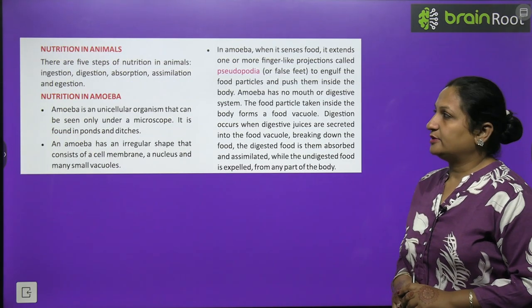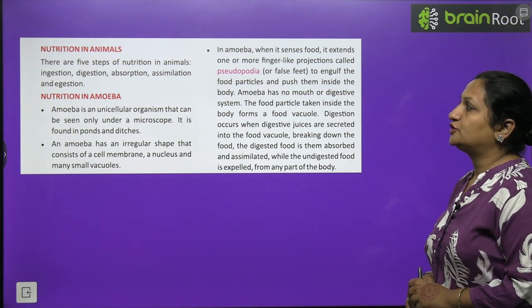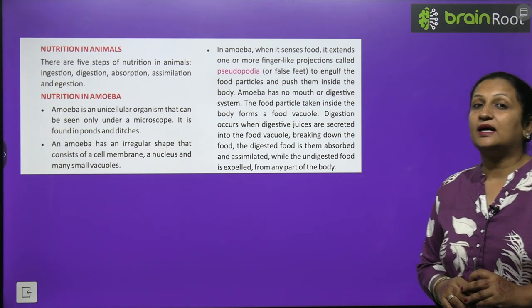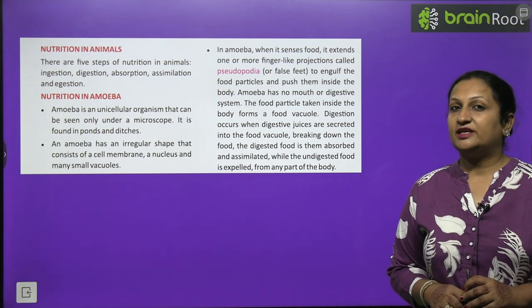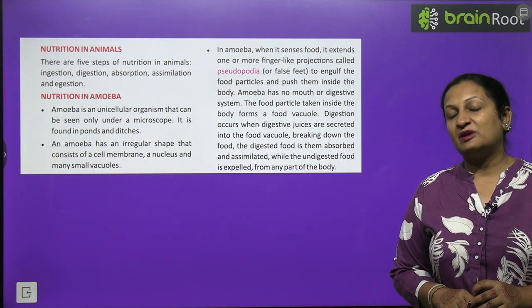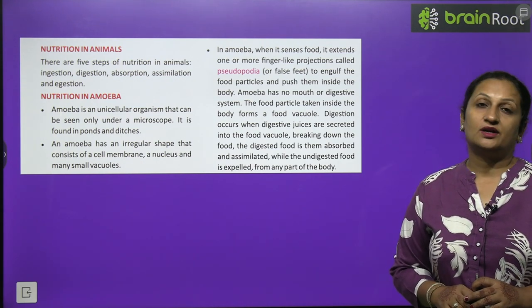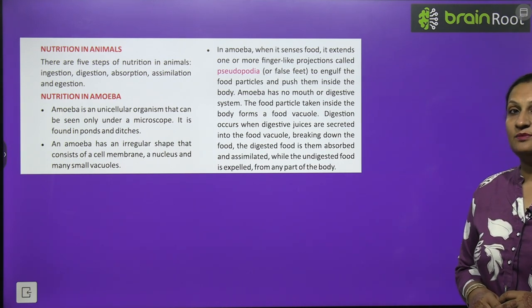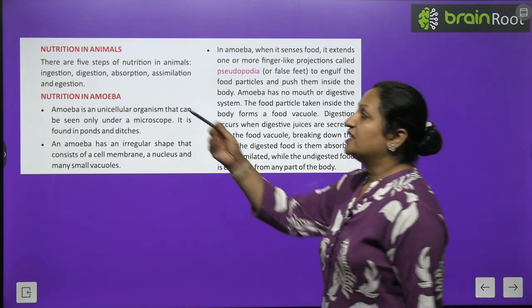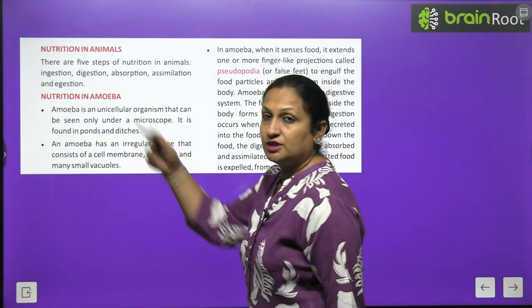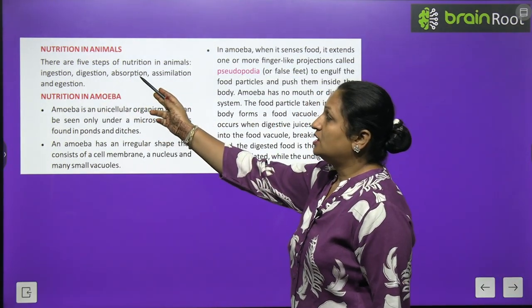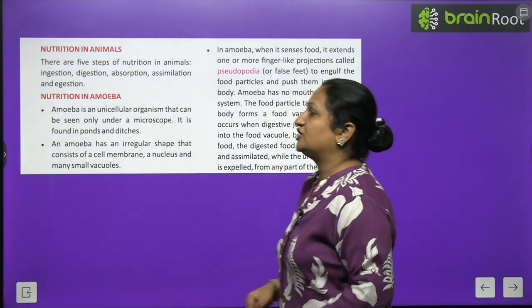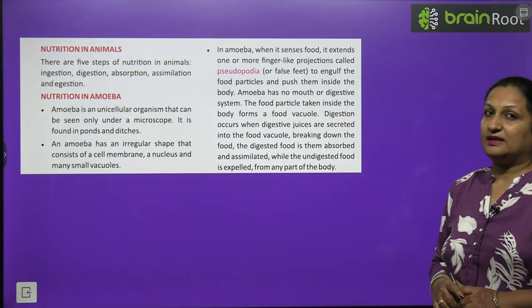Nutrition in animals involves five steps: ingestion, digestion, absorption, assimilation and egestion. We have complex material that must be broken down into simple substances, and that breakdown is completed in these five steps.